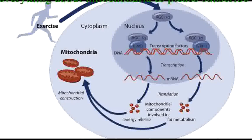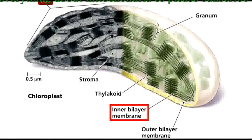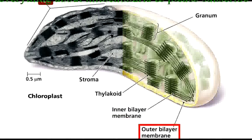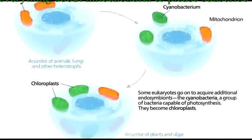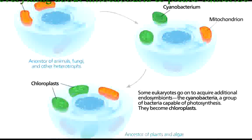Furthermore, both mitochondria and chloroplasts possess an inner membrane with a more prokaryotic composition, and an outer membrane with a more eukaryotic composition, consistent with a prokaryote engulfed by a eukaryote. In light of this evidence, consider for a moment just how amazing the endosymbiotic theory is. Had it not been for two chance events involving primitive single-celled organisms over a billion years ago, life on earth as we know it would not exist.